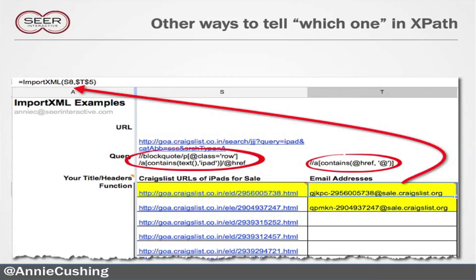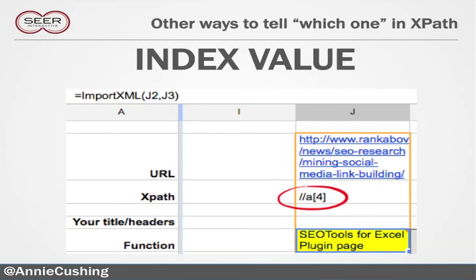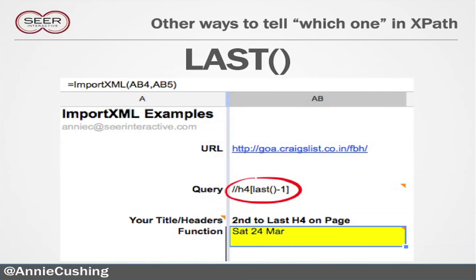Here's what that looks like. I even got extra tricky and scraped that list and said: go to that link, just get me the email so I can email the person about their iPad — it's like some inbred scraping thing, but it's cool. Or you can use the index value — this just tells me I want the fourth anchor. Or if you want to get extra tricky, you can use 'last'. And I experimented and realized I can get the second to the last H4 by saying last minus one. Now I'm just showing off.